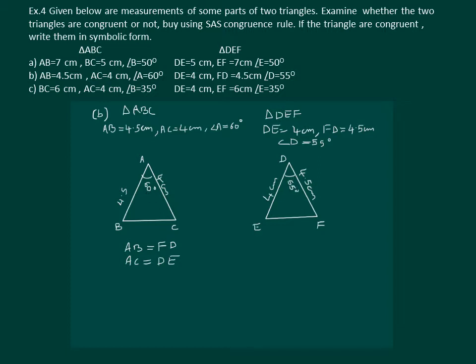Angle A is not equal to angle D, so we can say that the two triangles are not congruent by SAS property.